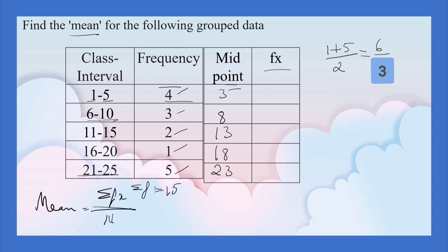4 3s are 12. 3 8s are 24. 2 13s are 26. 1 18 is 18. 5 23s are 115.